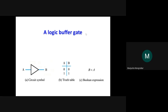Buffer is a sort of storage device. Whatever input is given, the same output is produced — the difference from NOT gate is there is no bubble. In NOT gate, input is complemented. In buffer, output equals input. Generally in memories we use the buffer gate. The Boolean expression is B equals A.